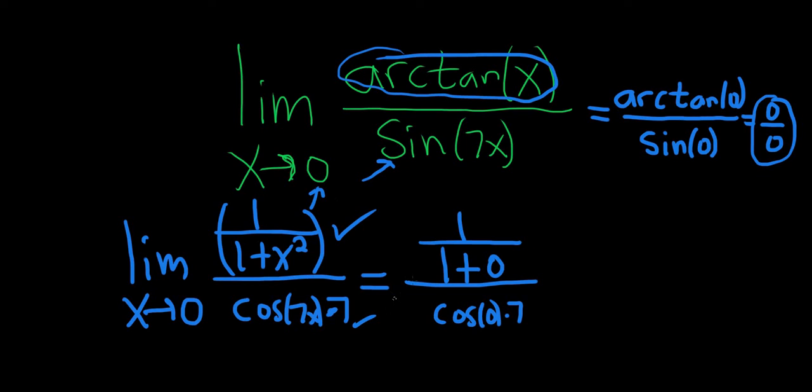And then we just plugged in the zero, drop the limit signs. So this is one over cosine of zero is one. So this is just one over seven, and that should be the final answer. I hope this video has been helpful. Good luck and take care.